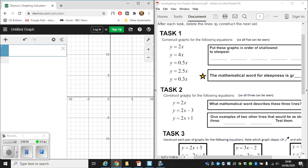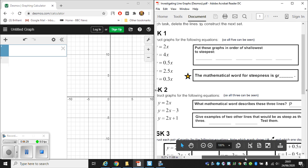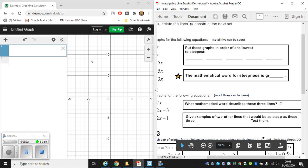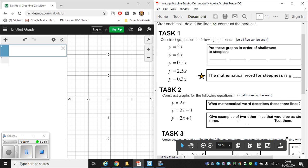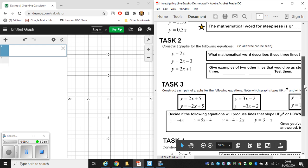So now I can start task number two. Task number two starts with construct graphs for the following equations so all three can be seen. So I've got three graphs written here. Y equals 2x. Y equals 2x minus 3. And y equals 2x plus 1. We have to construct all three. So I type all three into Desmos. And then what we're asked immediately after that would be what mathematical word describes the three lines. It gives us a clue. It starts with the letter P. We would have to produce all three graphs to have an idea on what word would best describe them. And then we have a follow up question that also relates to those three graphs.